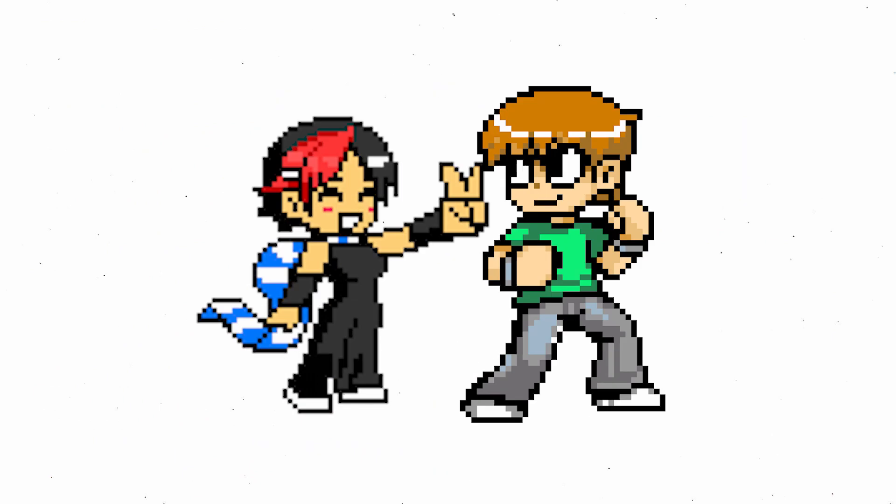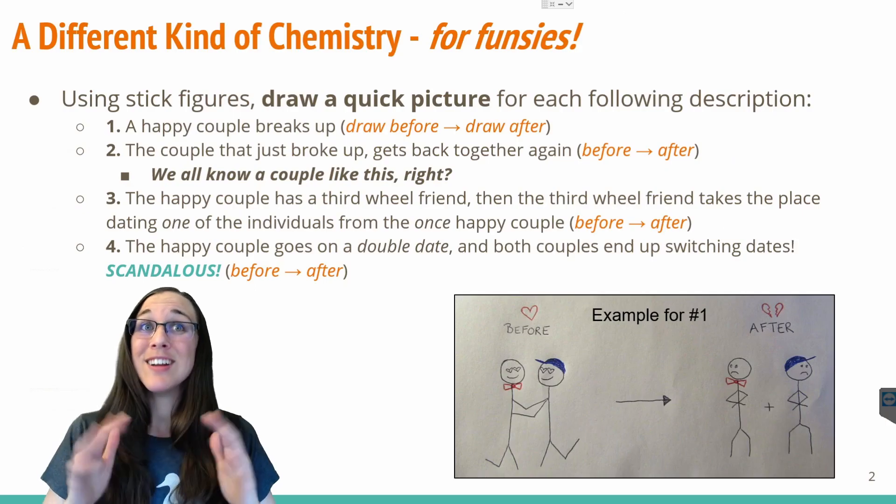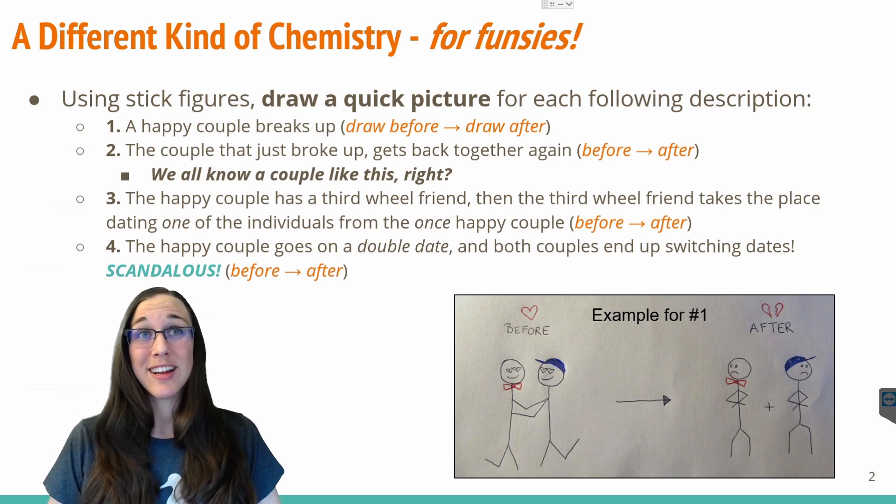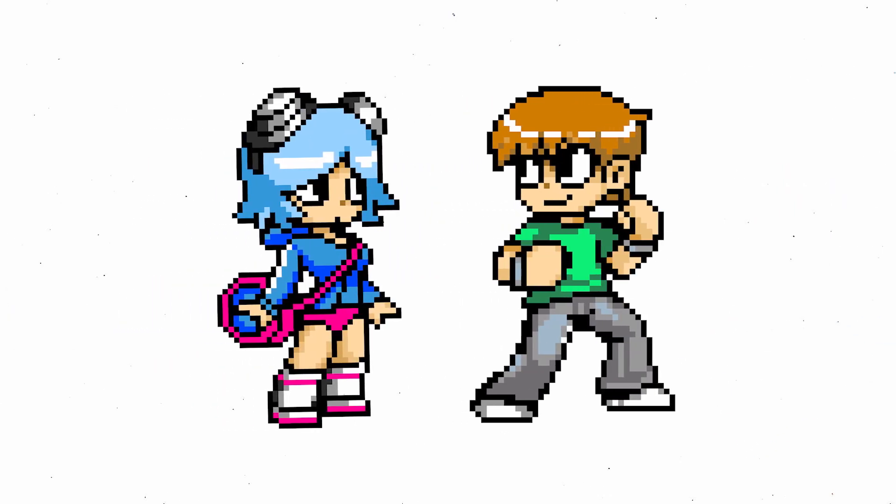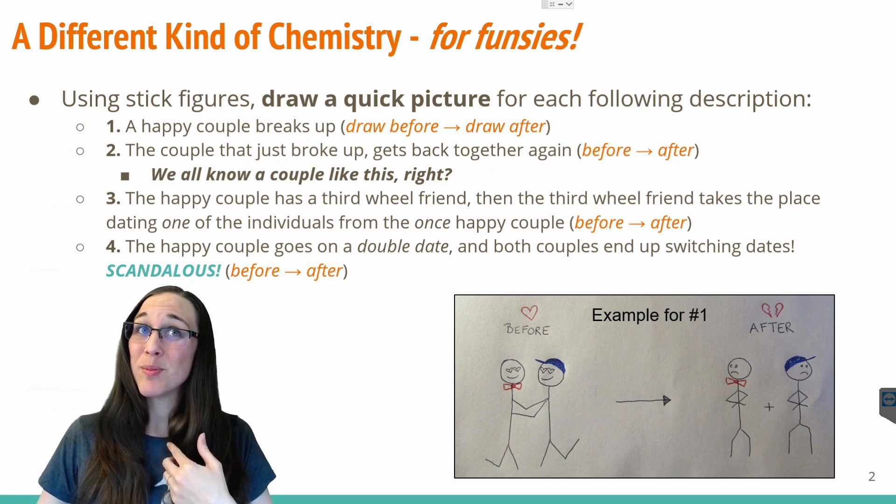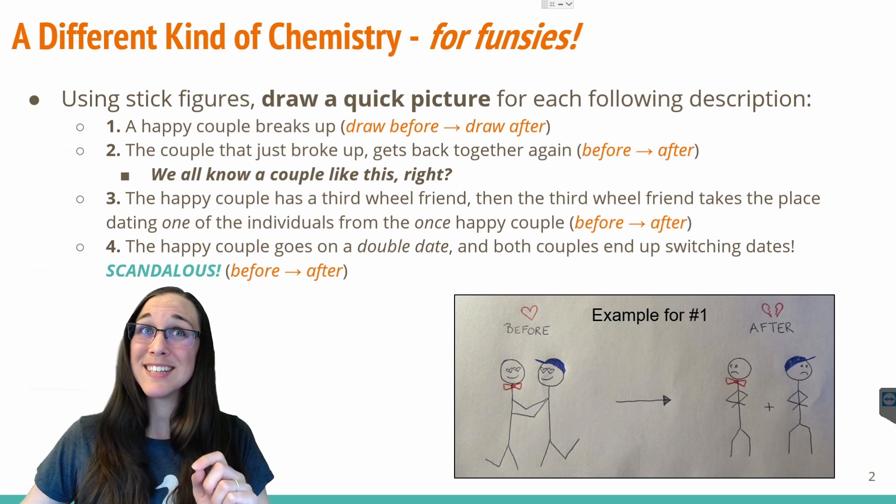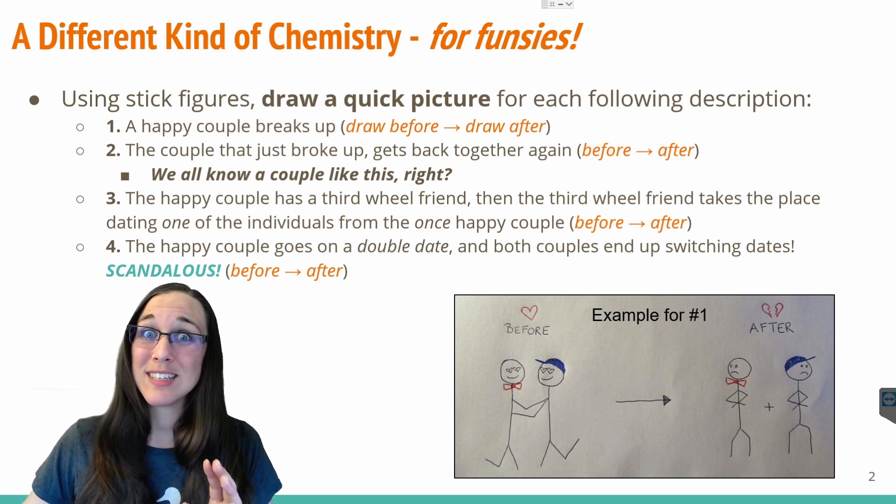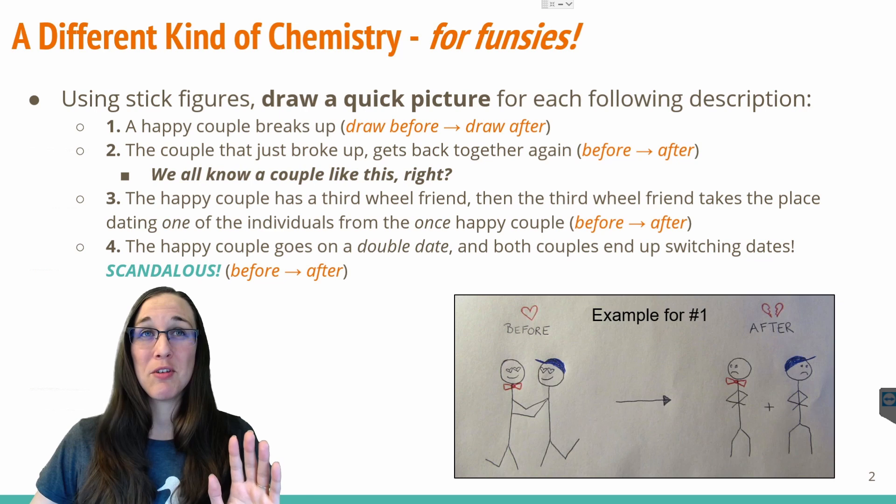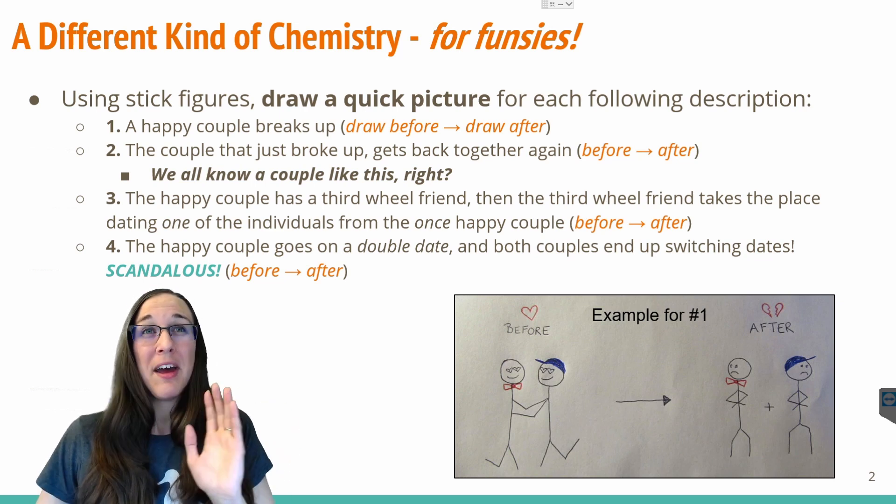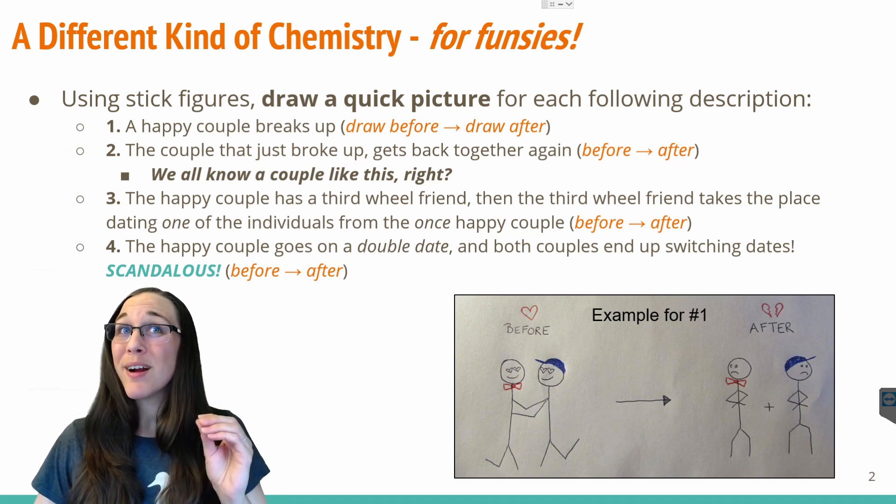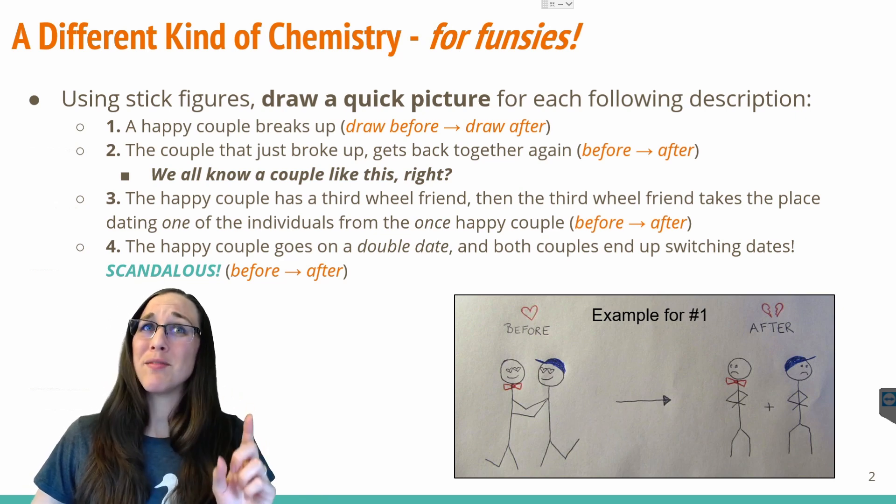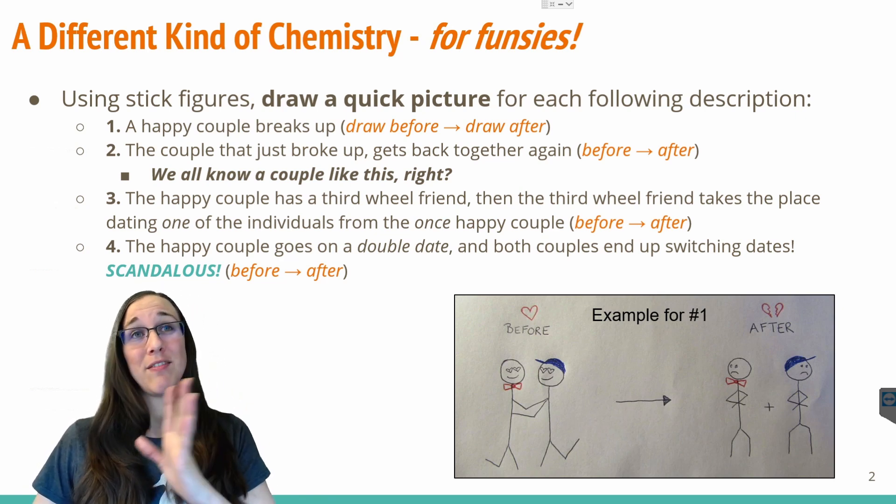Drawing number three, I want you to have a happy couple that has a third wheel friend. Been there, done that myself. So I totally understand you if you've also been in those shoes before. And then the third wheel friend is going to take the place dating one of the individuals from the once happy couple. So definitely not the scenario I've ever personally been privy to, but I have seen this happen to plenty of other people. I am very familiar with what it feels like to be the third wheel, but I was never involved in then jumping in the relationship. Anyways, so draw a happy couple, third wheel friend, and that third wheel friend is going to come in and split apart the happy couple and date one of them, leaving one of the members from the happy couple all alone in the after scenario.